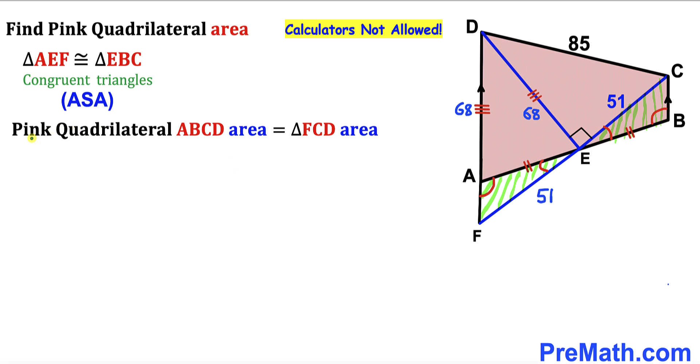Now let's make an observation. We can see the area of this pink quadrilateral ABCD is going to be equal to the area of this triangle FCD. We can see that this FCD is this shaded big triangle. So therefore this is sufficient enough to calculate the area of this triangle FCD now.